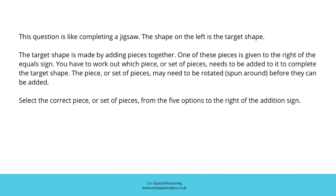This question is like completing a jigsaw. The shape on the left is the target shape. The target shape is made by adding pieces together. One of these pieces is given to the right of the equals sign. You have to work out which piece or set of pieces needs to be added to it to complete the target shape. The piece or set of pieces may need to be rotated or spun around before they can be added. Select the correct piece or set of pieces from the five options to the right of the addition sign.